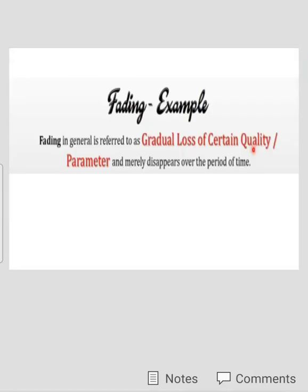What is fading effect? In wireless communication, we transmit our information signal from transmitter to receiver with the help of radio waves. As the distance between transmitter and receiver increases, the information signal power becomes weak. This respective effect of information signal power loss is called the fading effect. Fading in general is referred to as a gradual loss of a certain quality or parameter, and it merely disappears over a period of time.